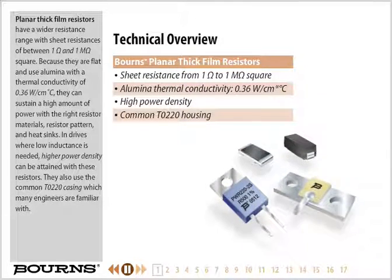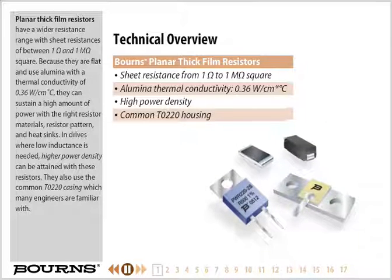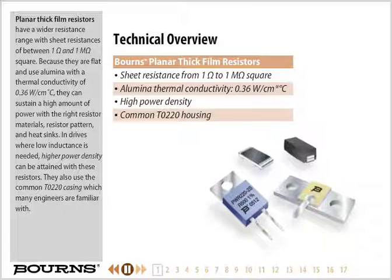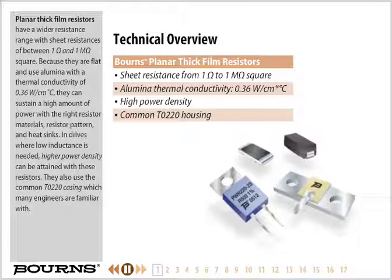Planar thick film resistors have a wider resistance range with sheet resistances between 1 ohm and 1 megaohm per square. Because they are flat and use alumina with a thermal conductivity of 0.36 watts per centimeter Celsius, they can sustain a high amount of power with the right resistor materials, resistor pattern, and heat sinks. In drives where low inductance is needed, higher power density can be attained. They also use the common TO220 casing, which many engineers are familiar with.